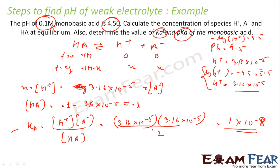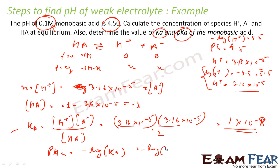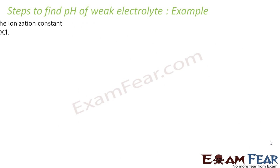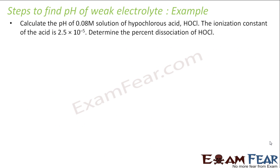We also want pKa. pKa = −log(Ka) = −log(10⁻⁸) = 8. So pKa = 8. Let's take one more example.